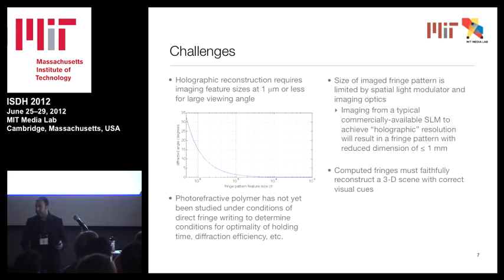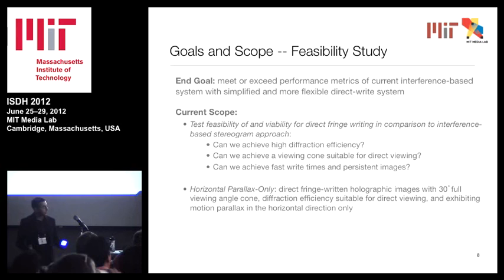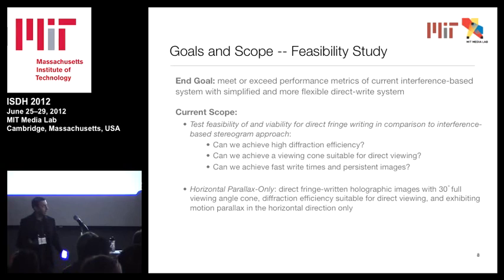Goals and scope: the end goal of a project like this is to meet or exceed the performance metrics of an interference-based system using this more simplified and flexible direct fringe writing system. But the scope of the current study is to test the feasibility and viability of this direct fringe writing approach in comparison to the interference-based stereogram approach. The questions we're posing are: can we achieve high diffraction efficiency? Can we achieve a view cone suitable for direct viewing? And can we achieve fast write times and persistent images? We're limiting ourselves to horizontal parallax only, targeting a look-around angle of about 30 degrees.